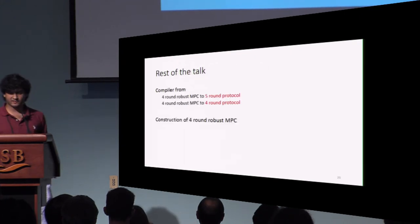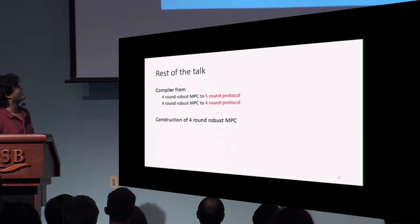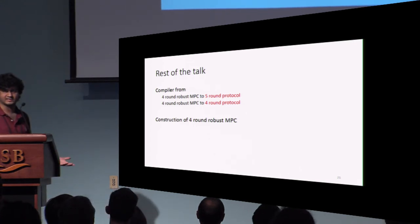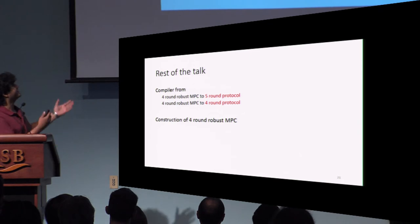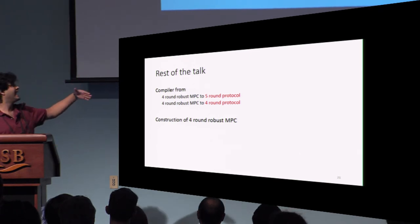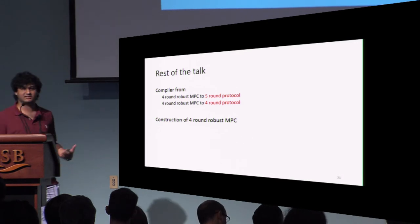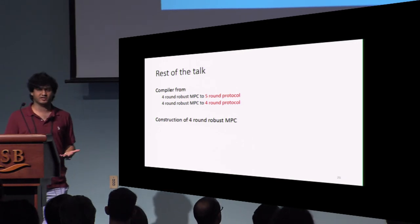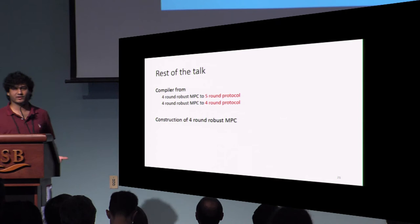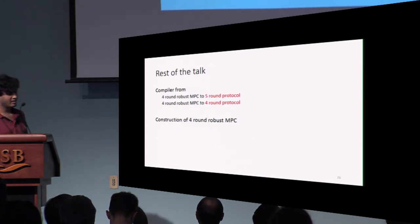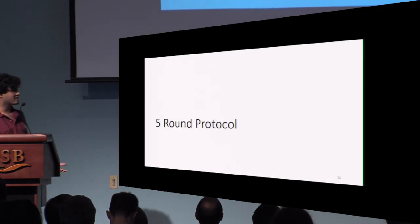In the rest of the talk, I'll discuss a compiler from a four-round robust MPC to a five-round protocol, and similarly to a four-round protocol. For the construction of the four-round robust MPC, I'll briefly touch on some key points.